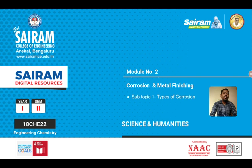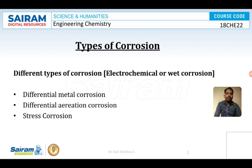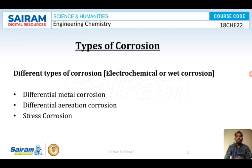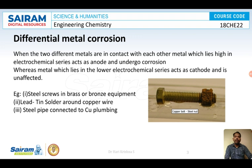Wet corrosion is further classified into different types. Let us discuss them one by one. Wet corrosion, also called electrochemical corrosion, is further classified into: differential metal corrosion, differential aeration corrosion, and stress corrosion. Let us discuss differential metal corrosion, differential aeration corrosion, and stress corrosion one by one.